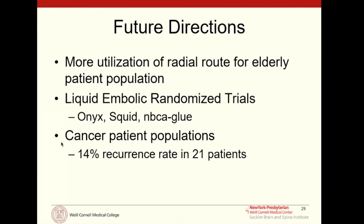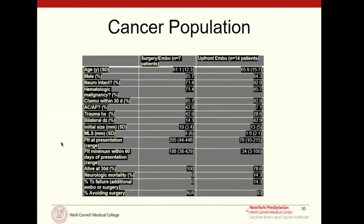We're now analyzing data among those groups to see how effective it is. Among the cancer patient population — those with leukemia who have qualitative and quantitative platelet defects — we found a 14% recurrence rate in the 21 patients treated with upfront embolization, and a zero percent recurrence rate so far in those who received surgery plus embolization. This does suffer from selection bias, as surgery-plus-embo patients are inherently better at clotting, but even as upfront treatment for a population with previously no options, it is a very powerful treatment modality.